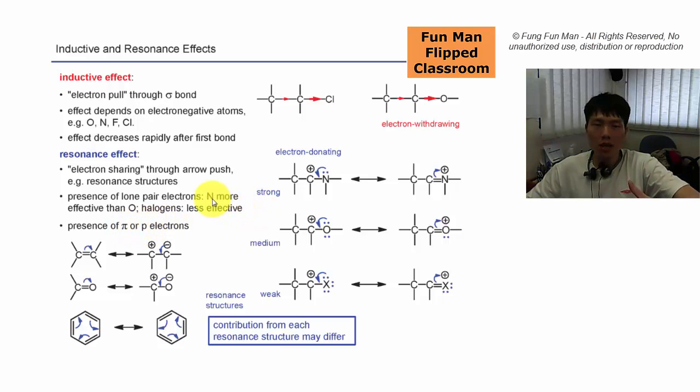You find resonance effect when you see lone pairs of electrons, pi bonds, and empty orbitals. Nitrogen having a lone pair is more effective than oxygen because it is less electronegative. Less electronegative means it doesn't want electrons so much, so nitrogen is a bit generous compared to oxygen, because oxygen wants it so bad, so it's a bit stingy towards giving electrons.